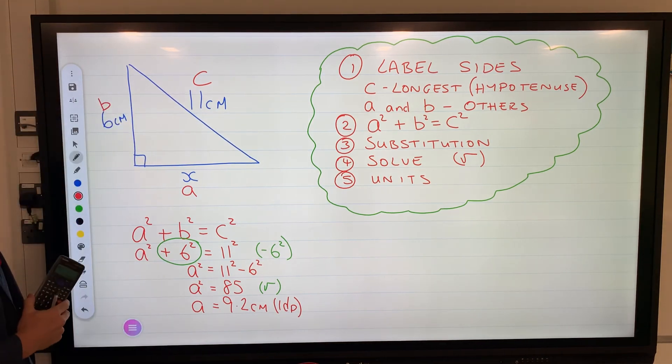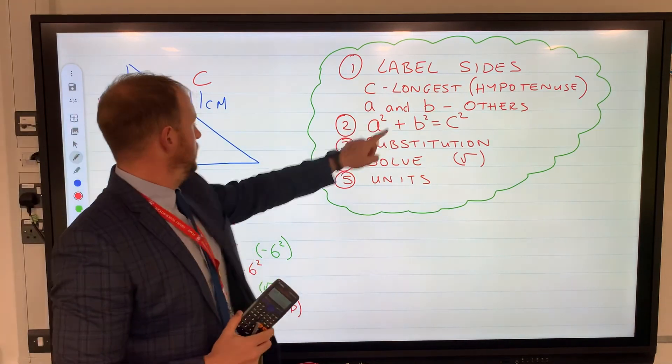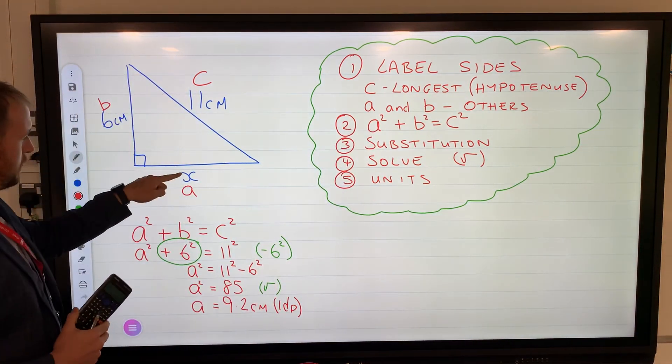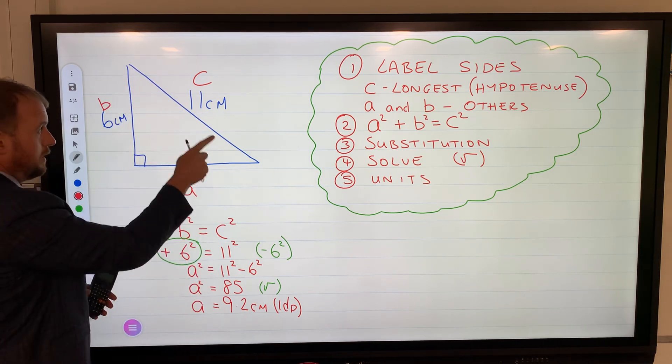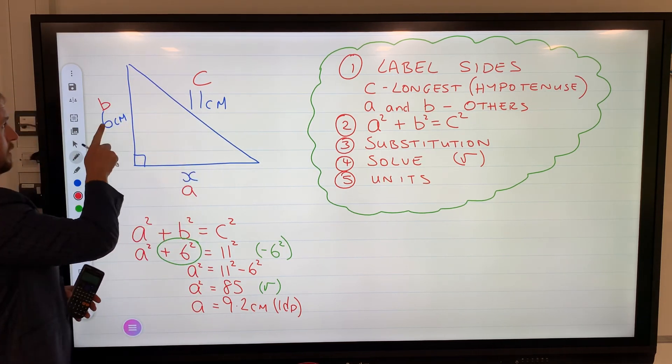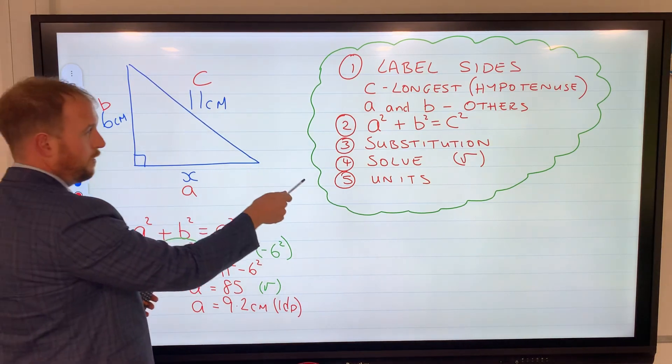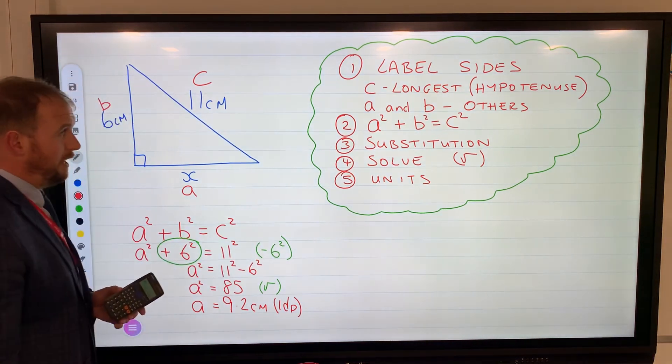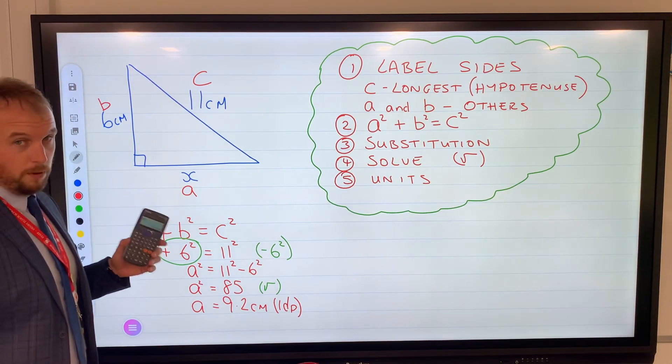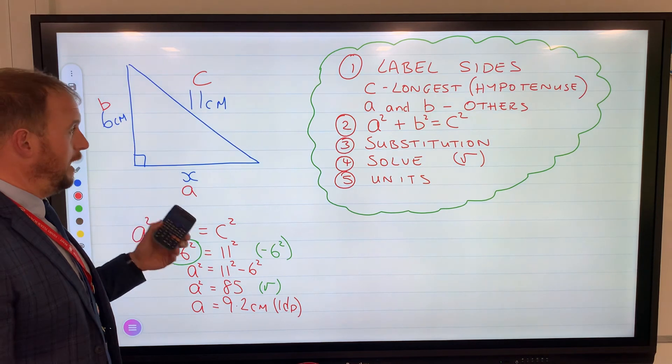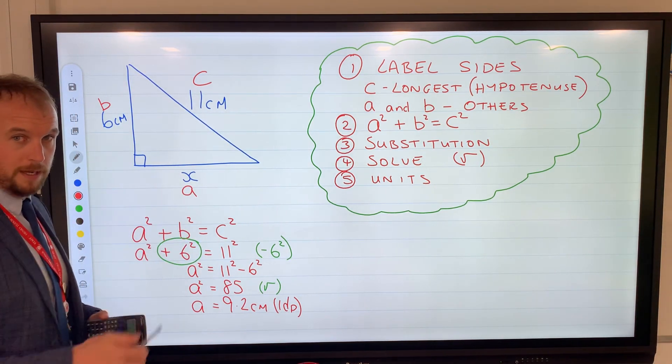So as a little rule: if we're calculating the long side, we need to add them together. If we're calculating the short side, you'll notice it's a subtraction - the longest side squared subtract the short side squared. This will all work for you if you follow the steps and get it right every time. Obviously you can have weird problems with these. Don't forget, if you've got a weird problem, draw your triangle first. Label, formula, substitution, solve, units. Best of luck.